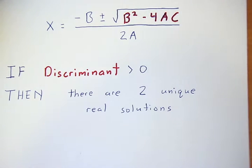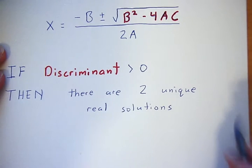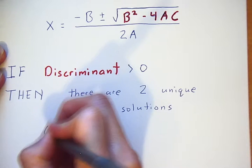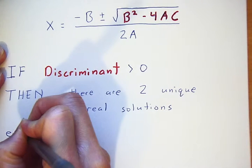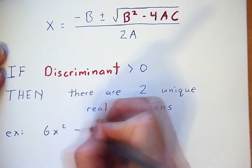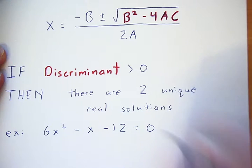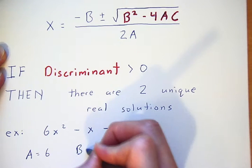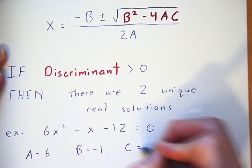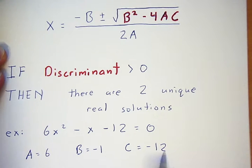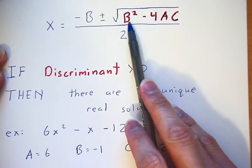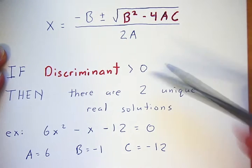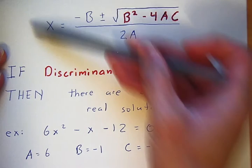Let's give an example. If I have the equation 6x squared minus x minus 12 equals zero, here my a is equal to 6, my b is equal to negative 1, and my c is equal to negative 12. If I were to plug those values into my quadratic equation, the b squared minus 4ac will be bigger than zero, or positive.